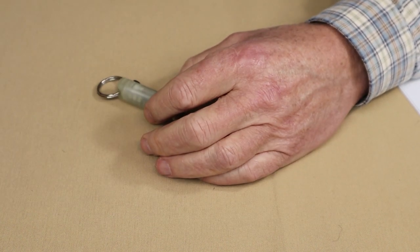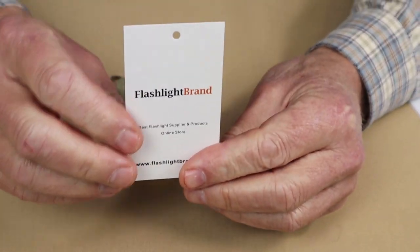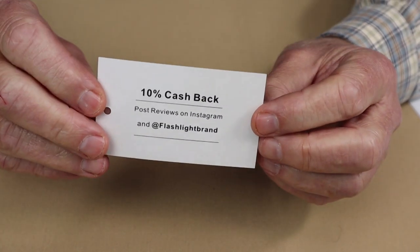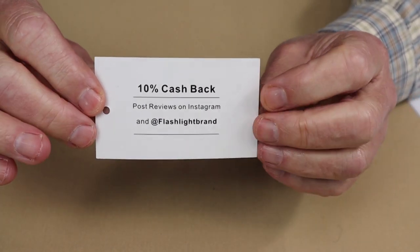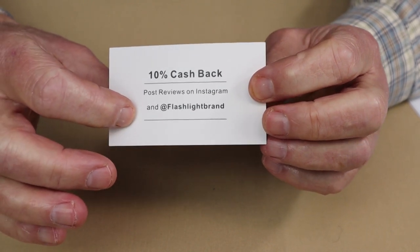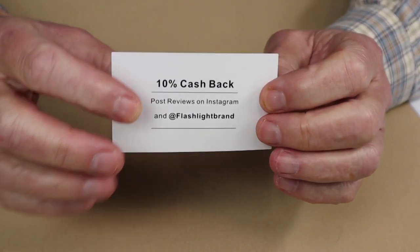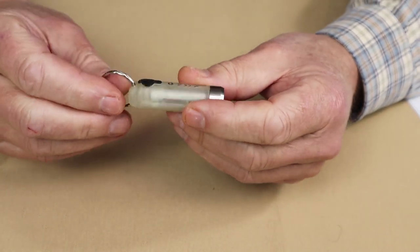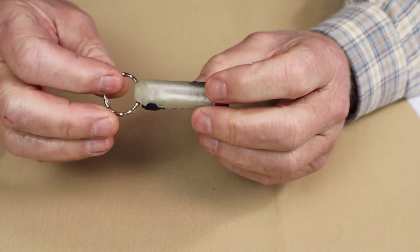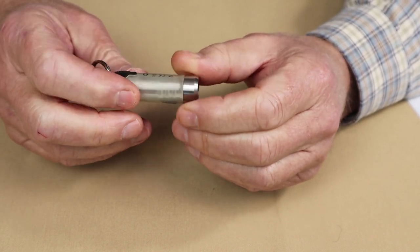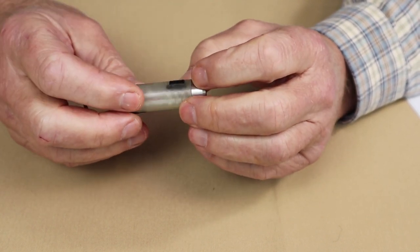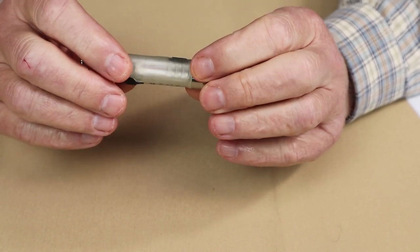Alright, there is one other thing that I want to share with you and that is this business card from Flashlight Brand. They asked me to show you this because they do have a 10% cash back offer for anyone that's interested. You can go to the site listed here. It will also be in the video description. Alright, let's put it aside. Like I said, that's all that came with it, not even the split ring. But I can tell you from having carried it for quite a while, I like this little light. It is actually a very good little keychain flashlight.